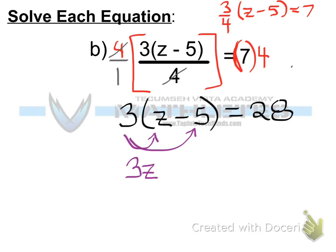That would be 3 times z, right here. And then also, we're going to be looking at 3 times negative 5, and that should give us negative 15.